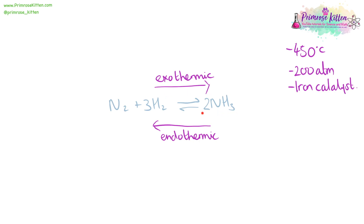There are less moles of product than there are moles of reactant — four moles on the reactant side and two on the product side. So high pressures of 200 atmospheres drive the forward reaction because the product takes up less space. A higher pressure would increase the rate of the forward reaction even more, but it would be dangerous because high pressure leads to risk of explosion. So 200 atmospheres is used because it is a relatively safe pressure. As we increase the pressure, the danger to workers increases, the thickness of the walls increases, and insurance costs increase.